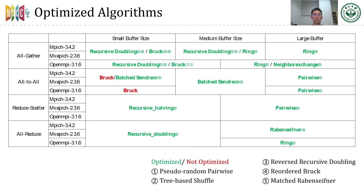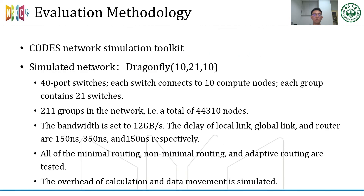So far, we have optimized nearly all the algorithms used in all-gather, all-to-all, reduce-scatter, and all-reduce, except the Bruck algorithm used for all-to-all operation, which we are still working on.